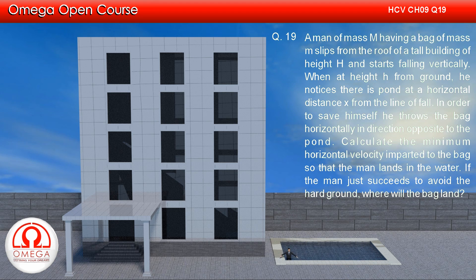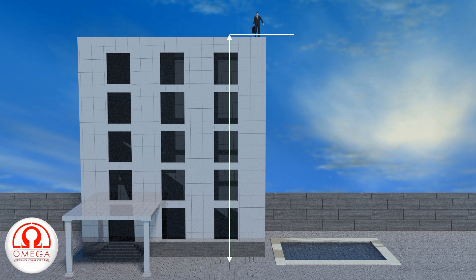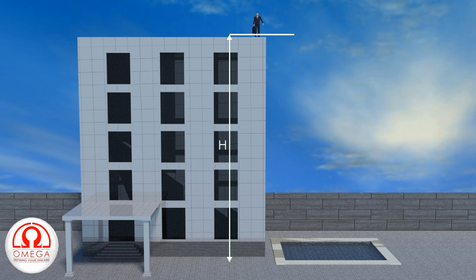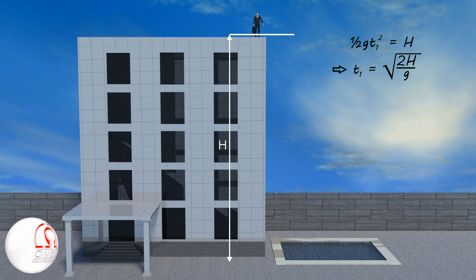Calculate the minimum horizontal velocity imparted to the bag so that the man lands in the water. The initial speed of the man is zero. If we assume he takes t1 time to reach the ground, then (1/2) g t1² must be equal to H, which implies t1 = √(2H/g).